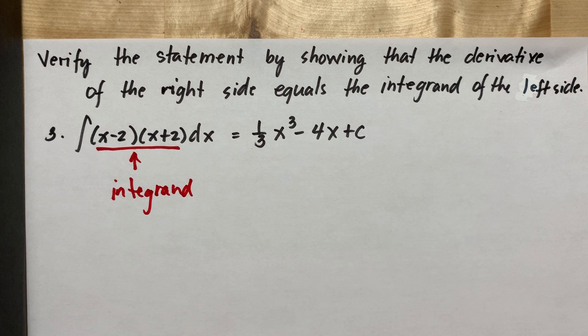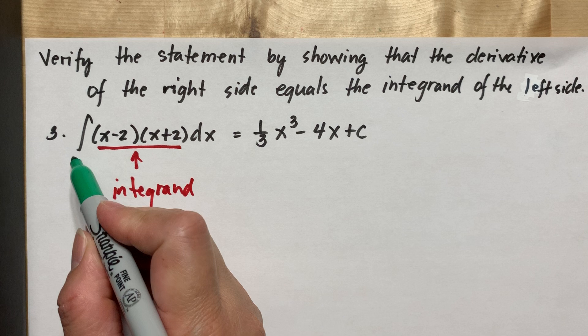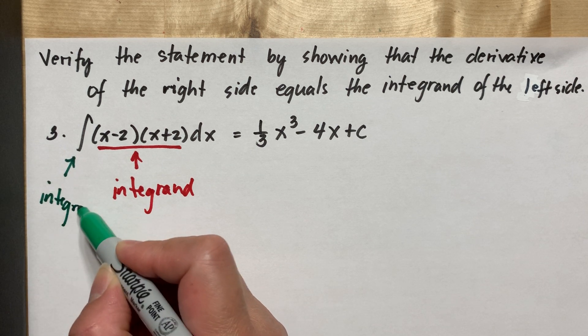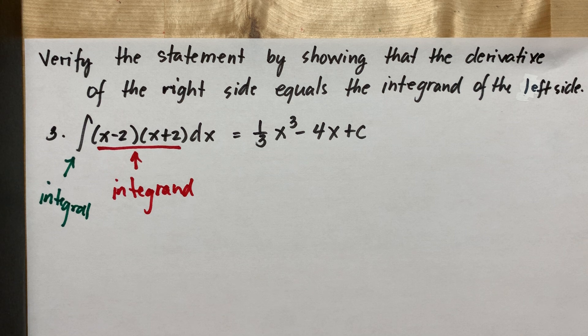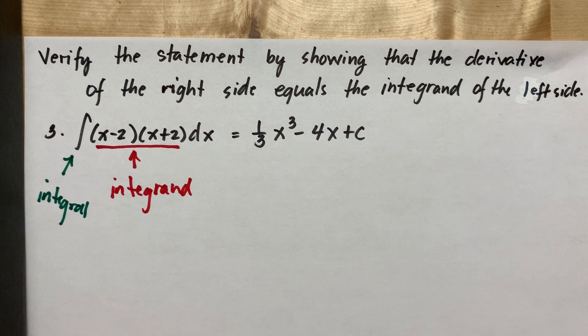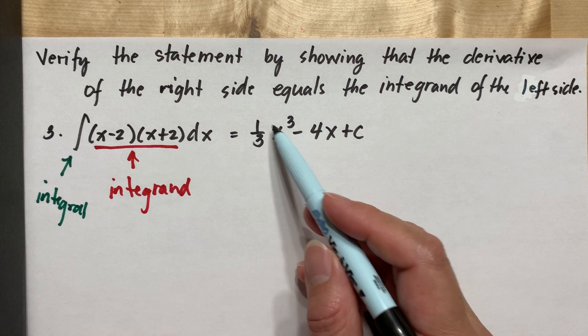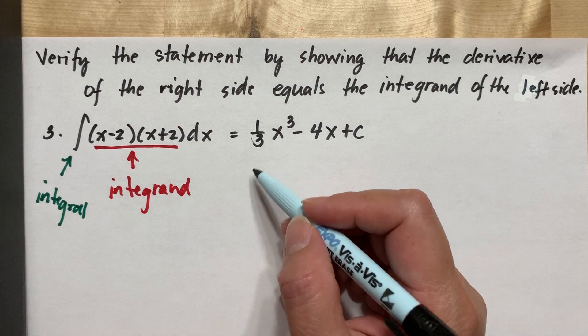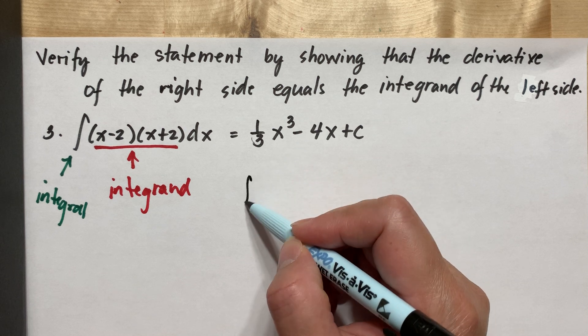And we call this as our integral. So the derivative of the integrand, the derivative of this, is equal to our integrand. So we will get the derivative of...